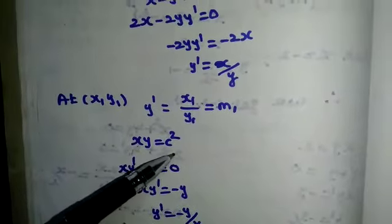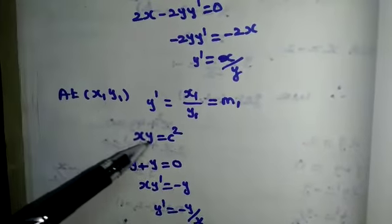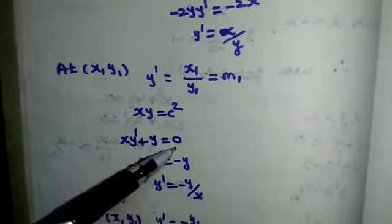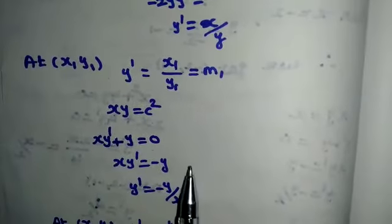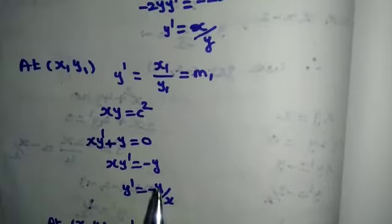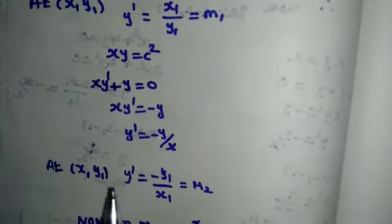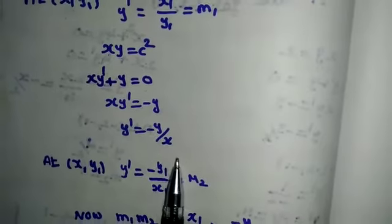Then xy is equal to c square. x y dash plus y is equal to 0. This is 0 by differentiation. So x y dash plus y is equal to 0. x y dash is equal to minus y. y goes to that side, we get minus y. From this, y dash is equal to minus y by x.